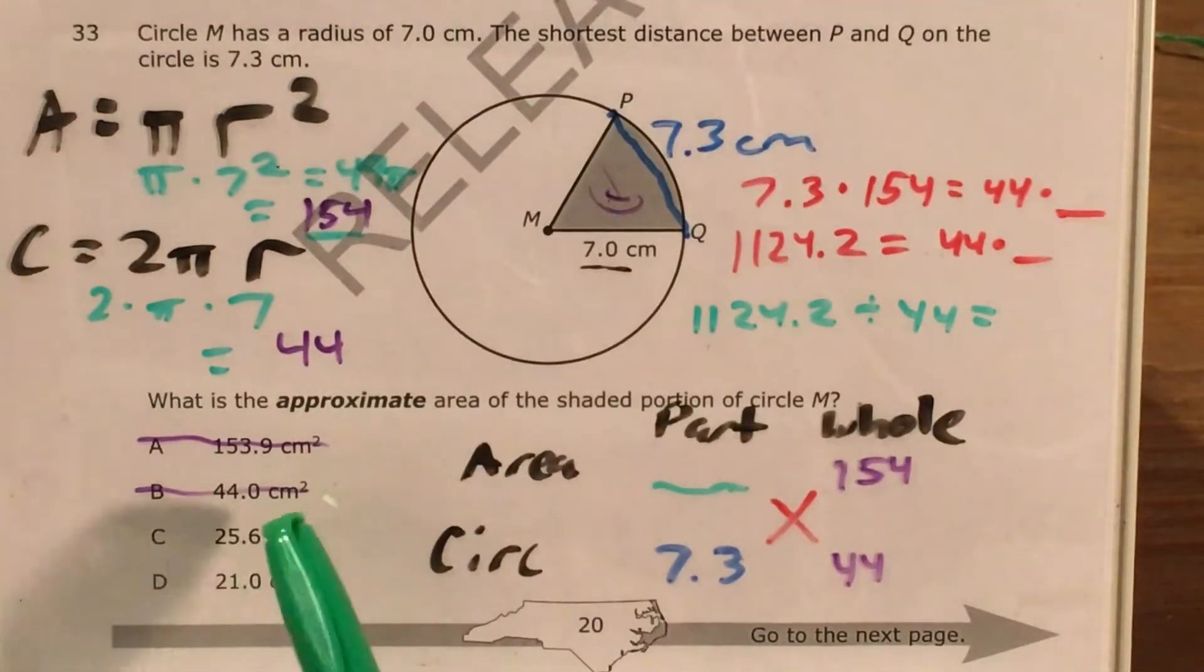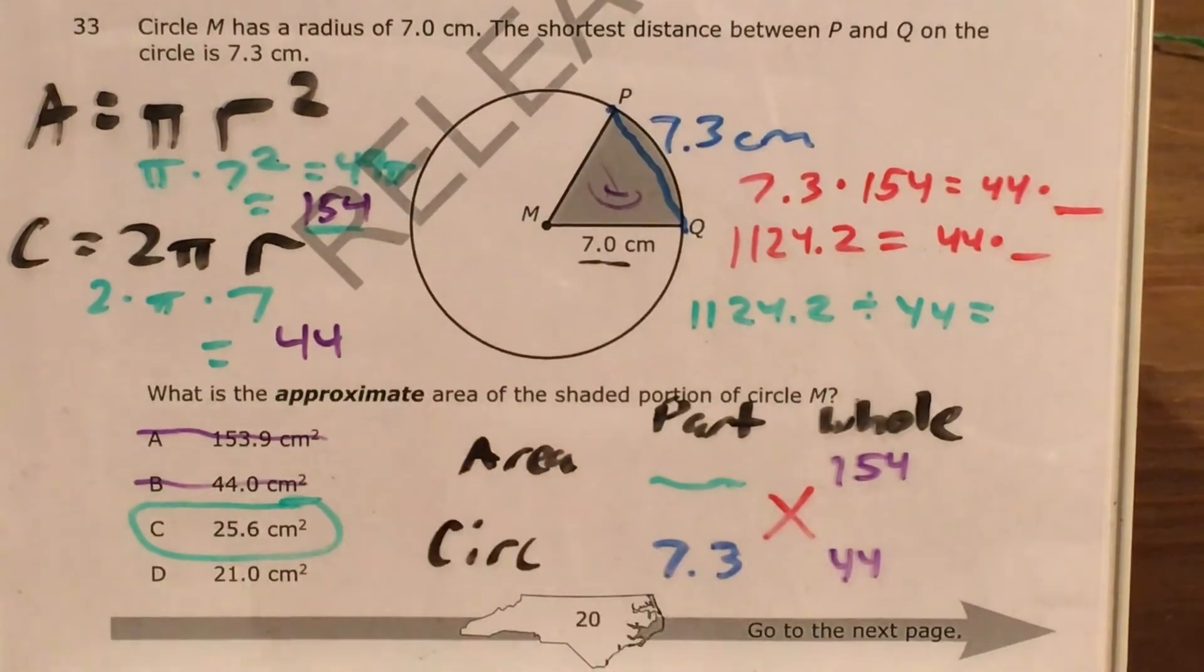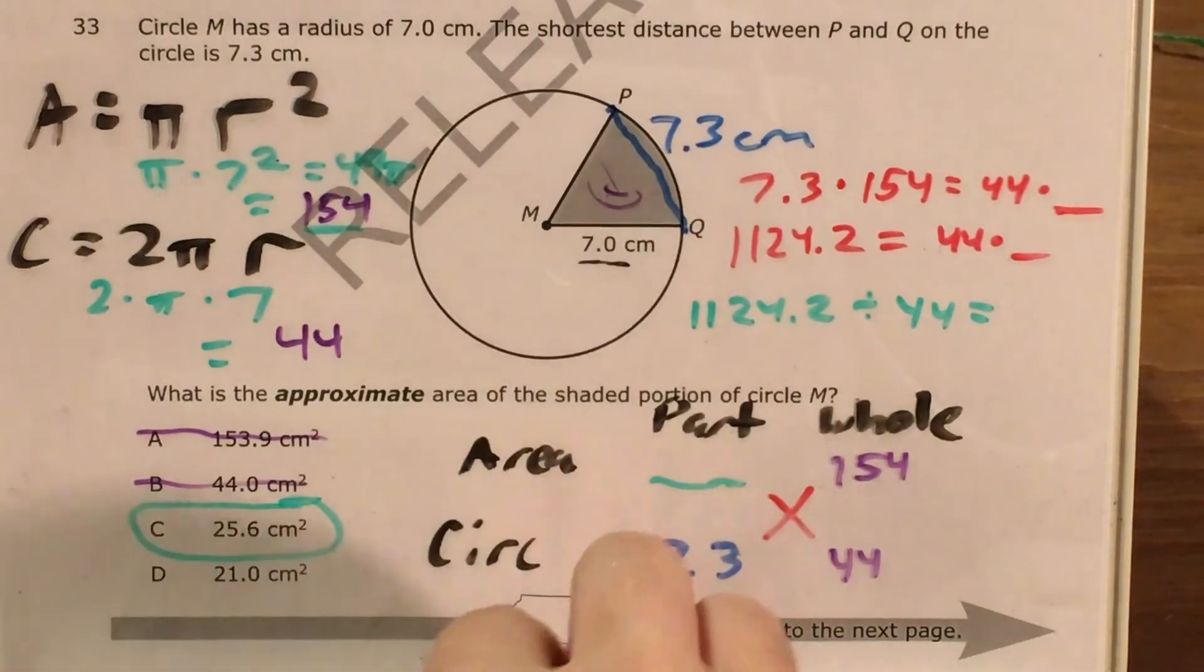Now which of our two remaining answer choices is 25 and 55 hundredths closest to? 25 and 6 tenths. So thank goodness we are done with that problem. After all that work, we got an answer of C, 25 and 6 tenths centimeters.